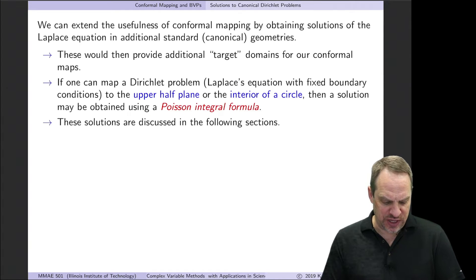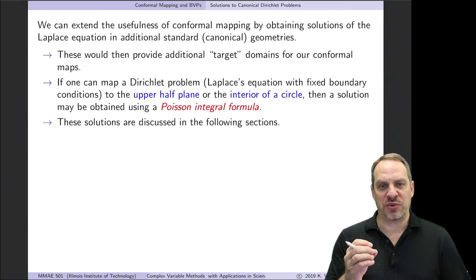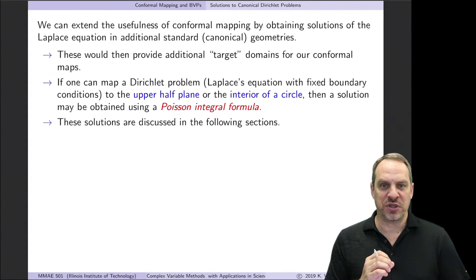The two problems we're going to look at are the upper half plane as well as the interior of a circle. These are called Poisson integral formulas. I'm just going to sketch the process by which we get these results, but I want to focus on the Poisson integral formulas themselves.